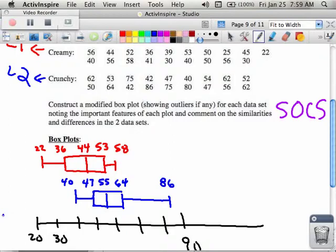In the crunchy, I notice that the spread is from 40 to 86, which means that the range is 46, which happens to be greater than the creamy's range. I also notice that its median is at 55, meaning higher than what creamy is. I also notice that creamy was skewed to the left, but crunchy is skewed to the right.